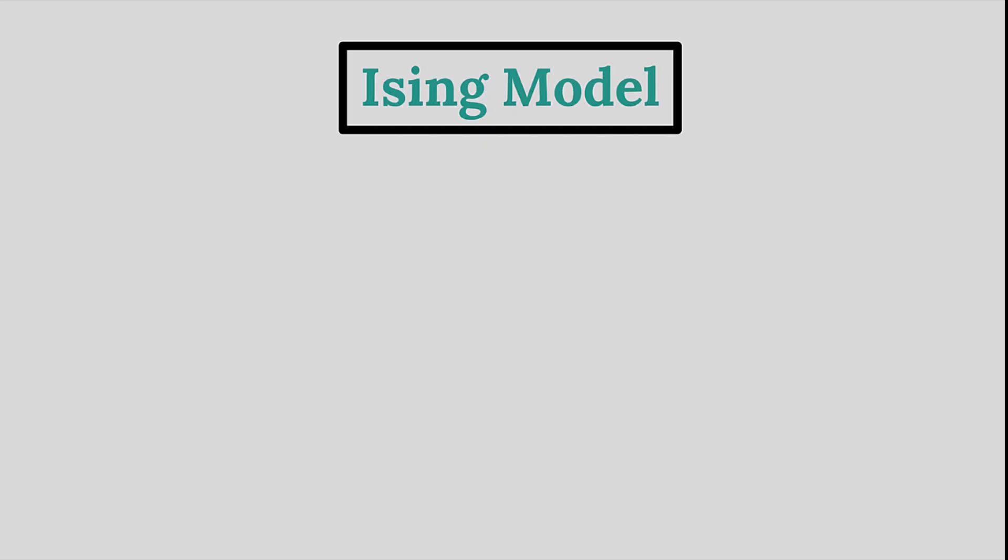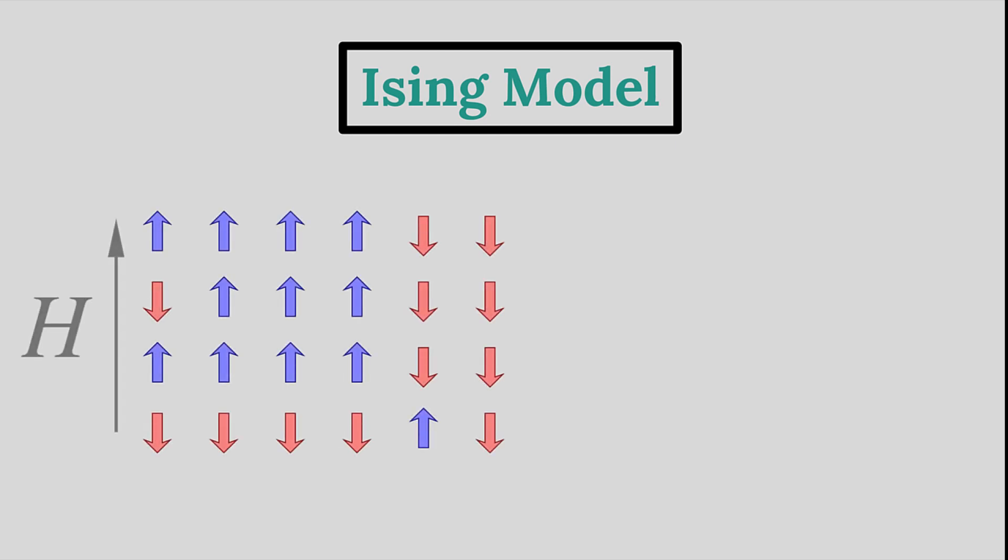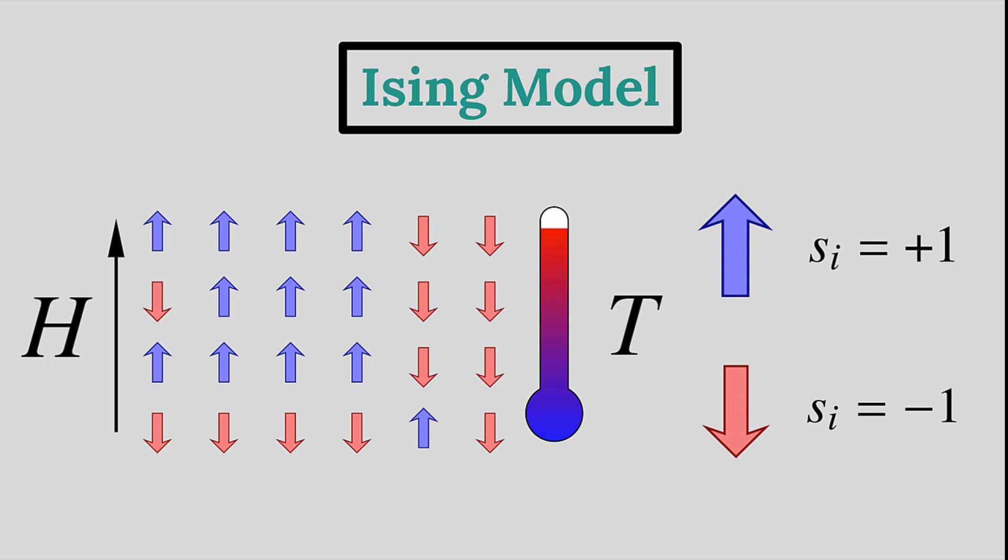The 2D Ising Model is a two-dimensional lattice in a magnetizing field with strength H, held at some temperature T. Each site corresponds to a quantum spin, which can be oriented up or down, and is attributed values plus and minus one accordingly.